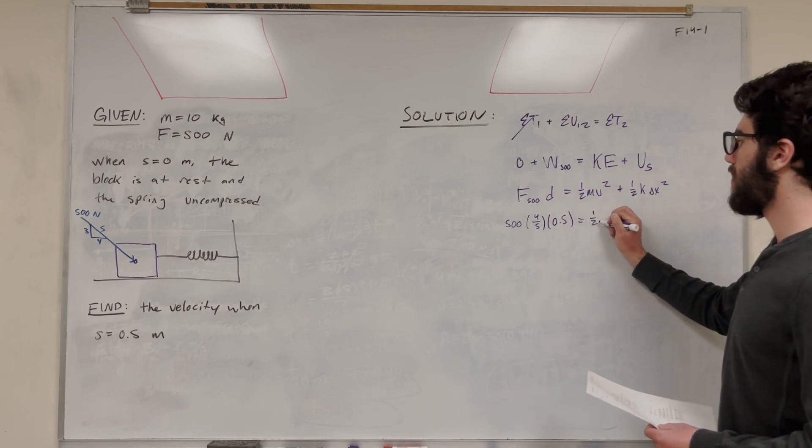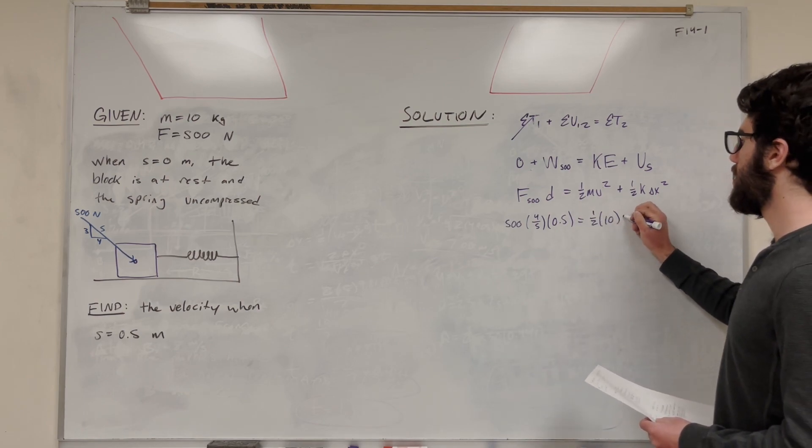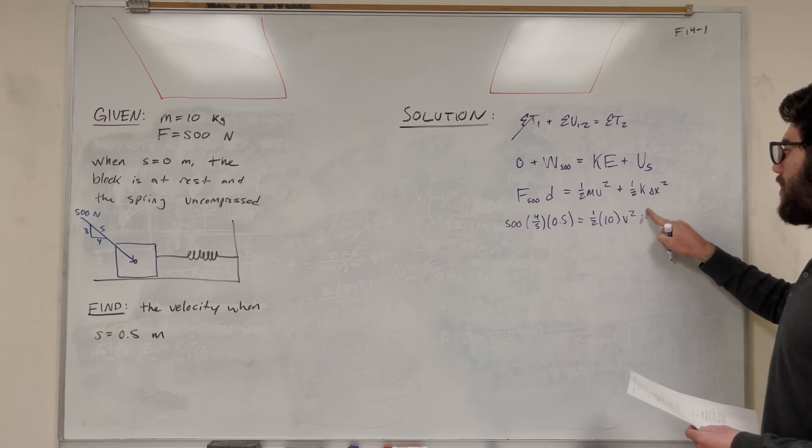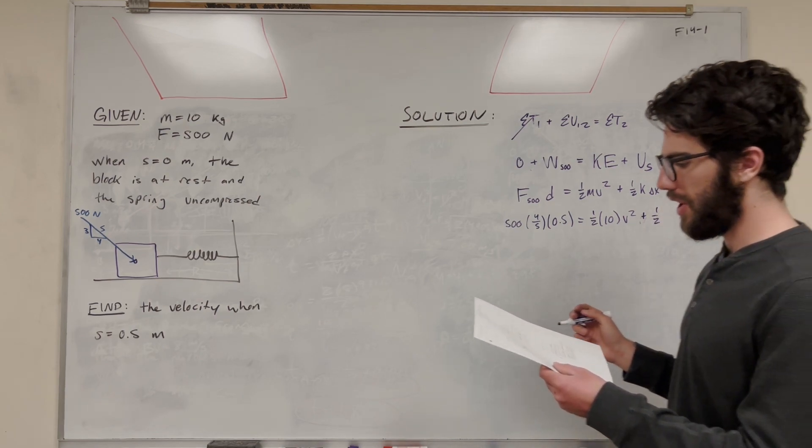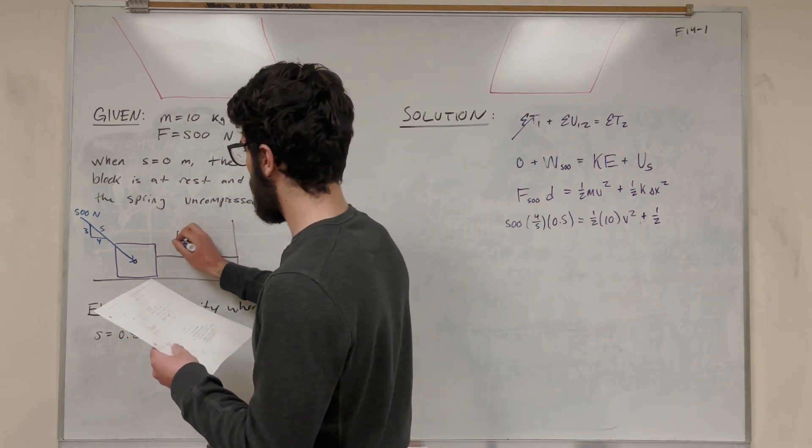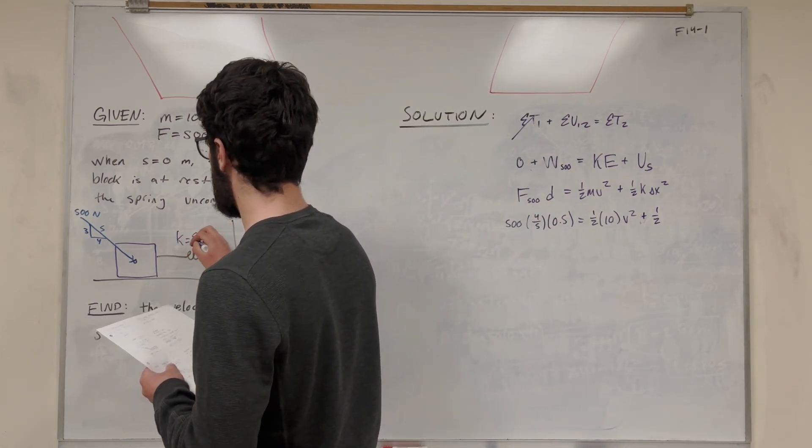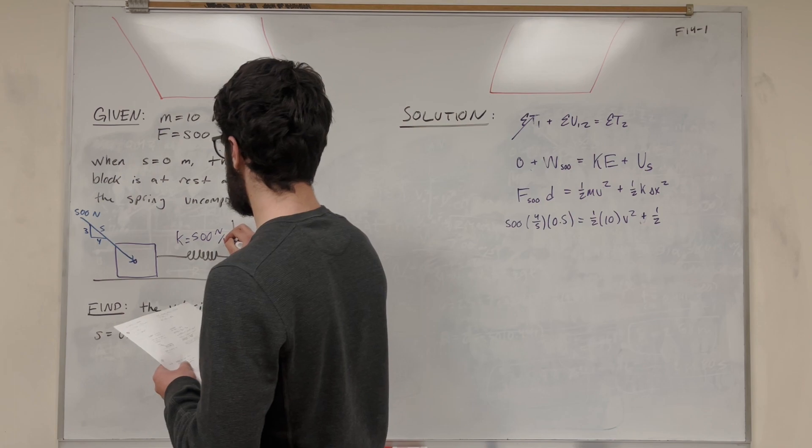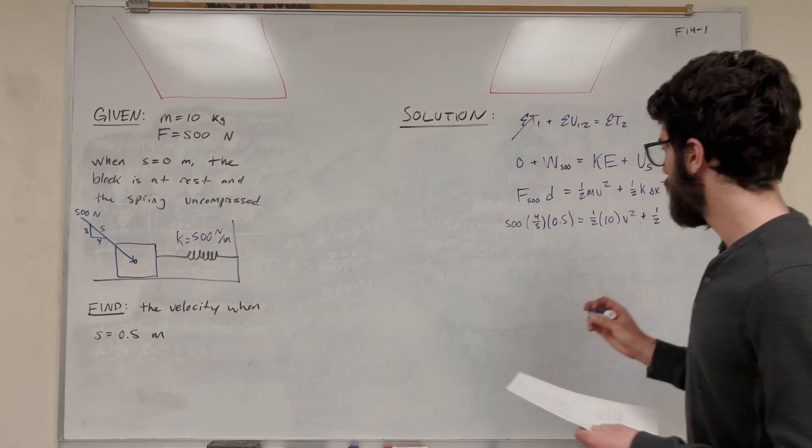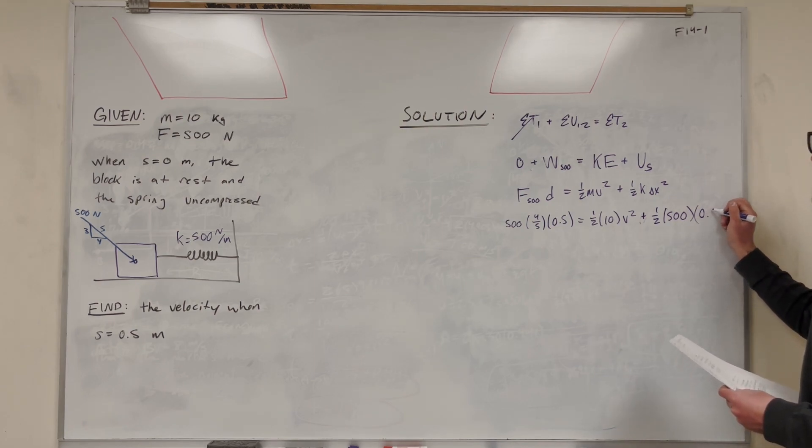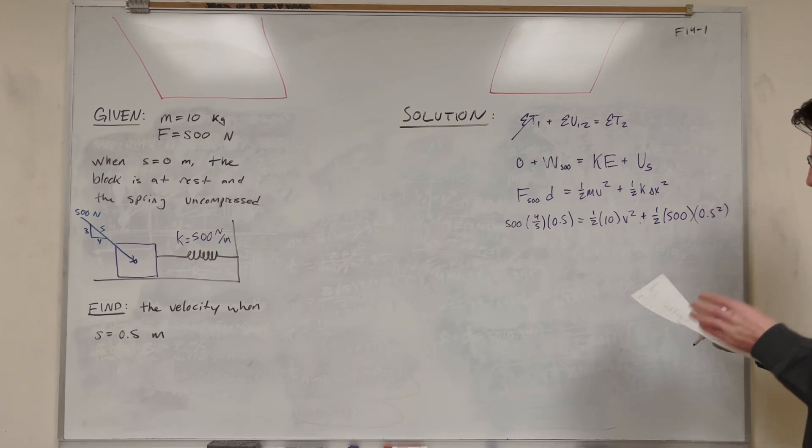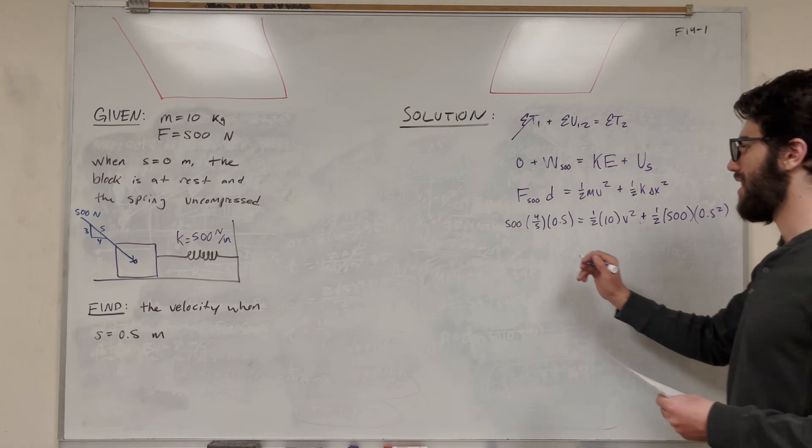As you go to 1 half, the mass is 10 kilograms, and velocity squared is what we're solving for. And add that to 1 half. Do we have k? I totally forgot to write the spring constant. k is 5. And go back, 500, change in x squared again to 0.5. Make sure I did all this right. Probably. I'll solve this on my calculator later.